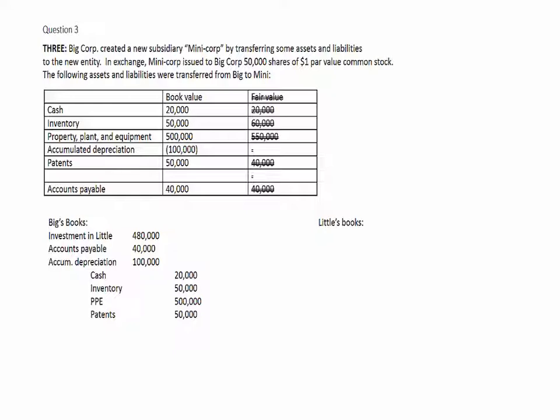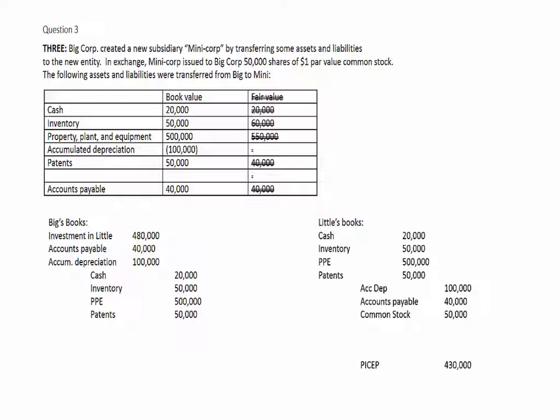On the other side of the transaction, Minicorp is going to record the receipt of those various assets at book value. They're going to record the receipt of the accounts payable and the accumulated depreciation balance. And they're going to issue 50,000 shares of stock valued at the book value of the net assets surrendered. Common stock: 50,000 shares at the $1 par value. The remainder of that total net asset contribution is paid-in capital.